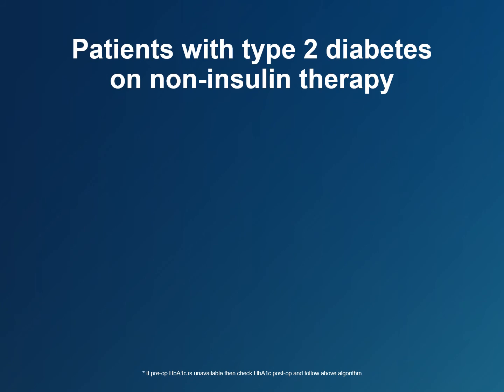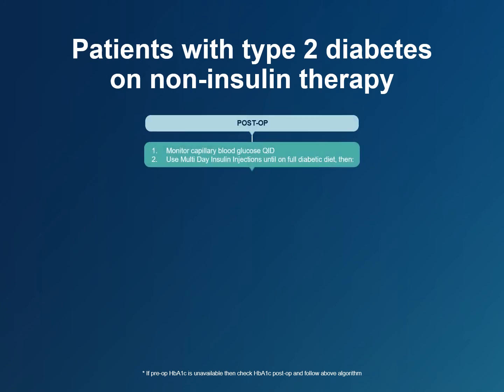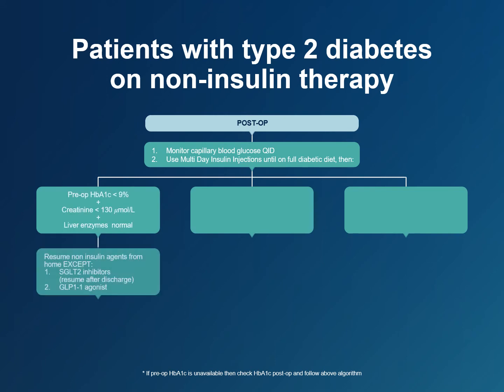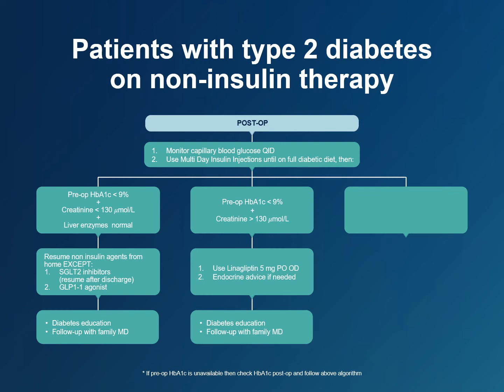Type 2 diabetes, not on insulin: For all patients, order QID capillary blood glucose levels and use a multi-daily injection insulin regimen until they tolerate a full diabetic diet and are ready to resume their home medications. If the hemoglobin A1c is less than 9%, creatinine is less than 130, and liver enzymes are normal, resume non-insulin therapy except for SGLT2 inhibitors and GLP-1 agonists. If hemoglobin A1c is less than 9% but renal function has not recovered, then use linagliptin 5 milligrams per day. Once renal function normalizes, resume other non-insulin-based medications except SGLT2 inhibitors and GLP-1 agonists.